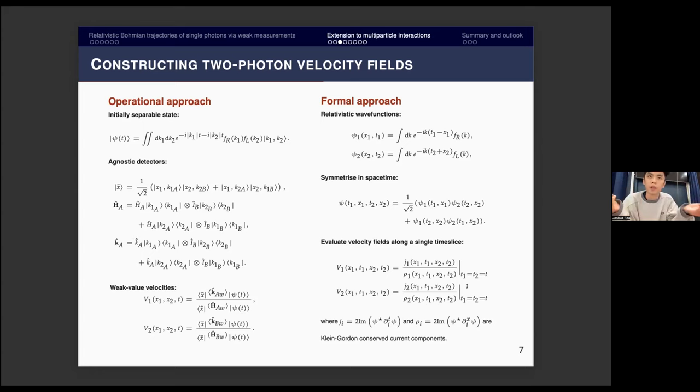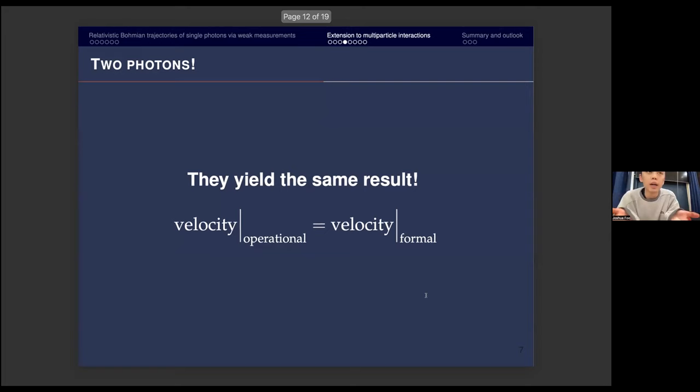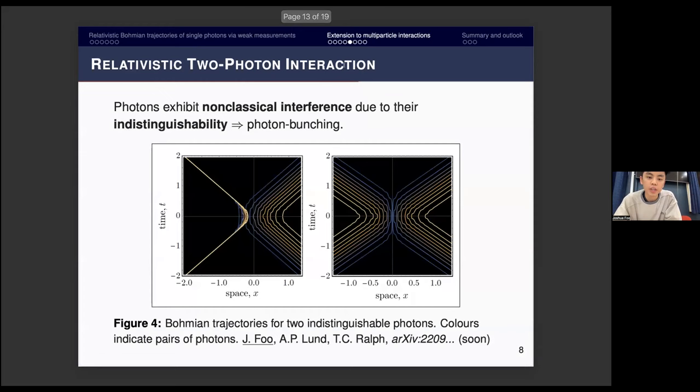Long story short, the left-hand side does equal the right-hand side, which means that we have been able to ground this somewhat debated theory of relativistic Bohmian mechanics with multiple particles now in a measurement formalism that should in principle allow some experimentalists to go and do this in the lab.